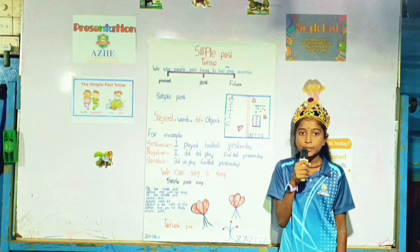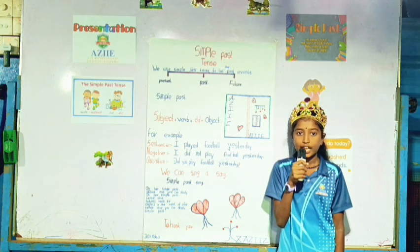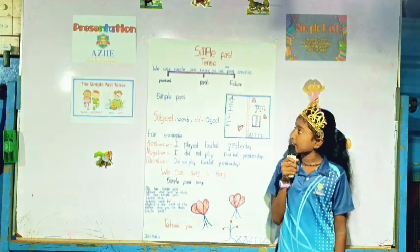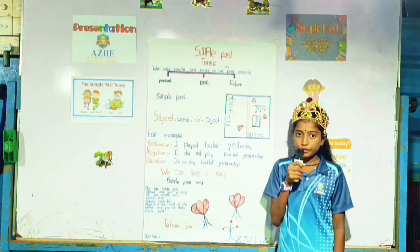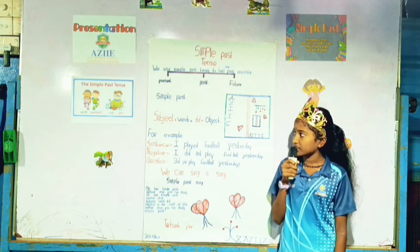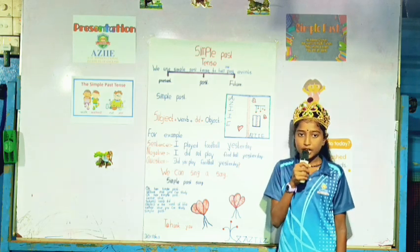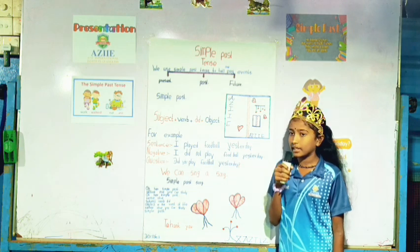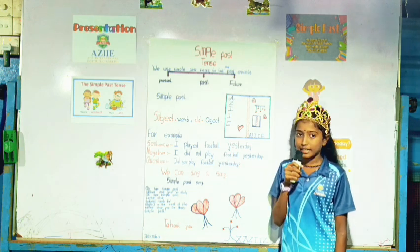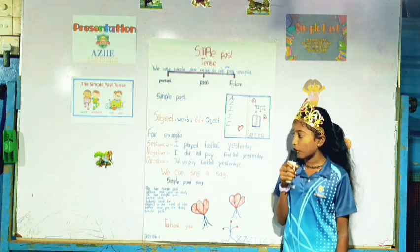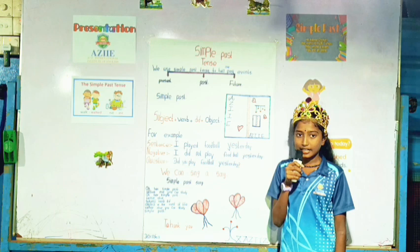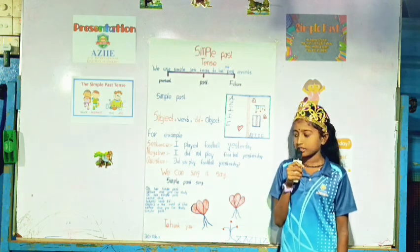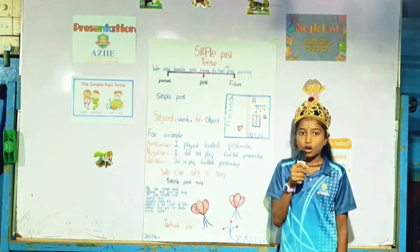We use simple past tense to tell the past events. For example: I played football yesterday. Negative form: I did not play yesterday. Question form: Did you play football yesterday?